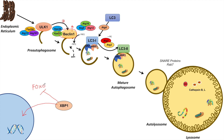XBP1 also has roles in inhibiting FOXO proteins. We've learned that FOXO proteins can lead to the upregulation of ATG proteins such as ATG4, ATG5, ATG12, LC3, and ULK1. So because XBP1 suppresses FOXO proteins, it can suppress many of these macroautophagy pathway proteins. It can upregulate Beclin-1 directly, but it can also downregulate Beclin-1 and other targets indirectly through its suppression of FOXO proteins — giving XBP1 a dual function.